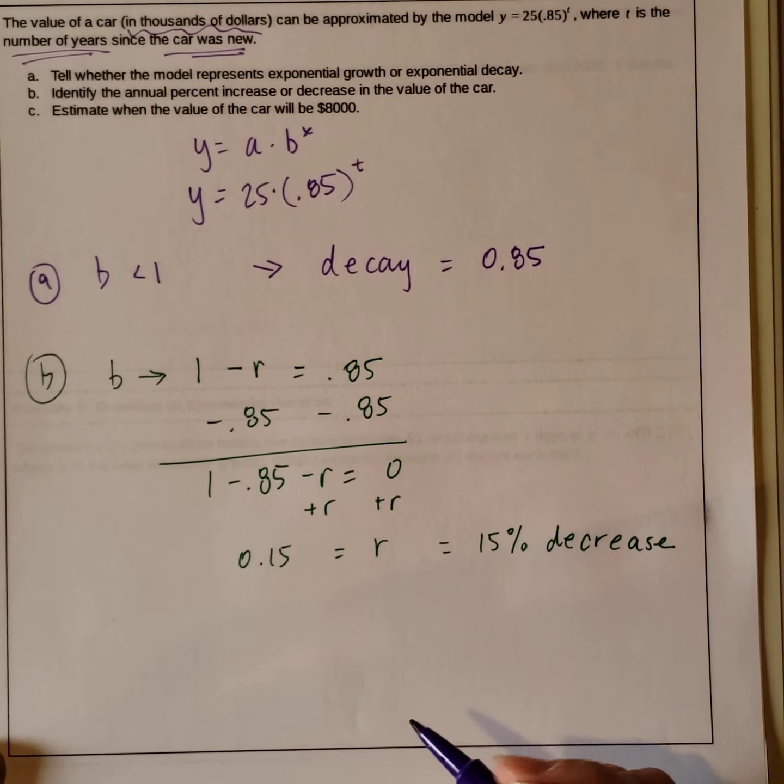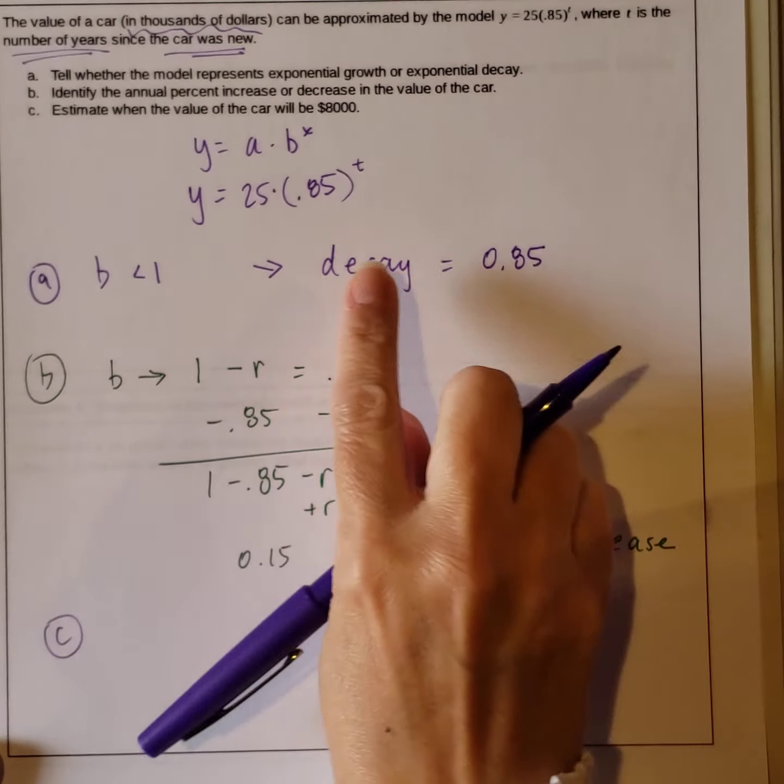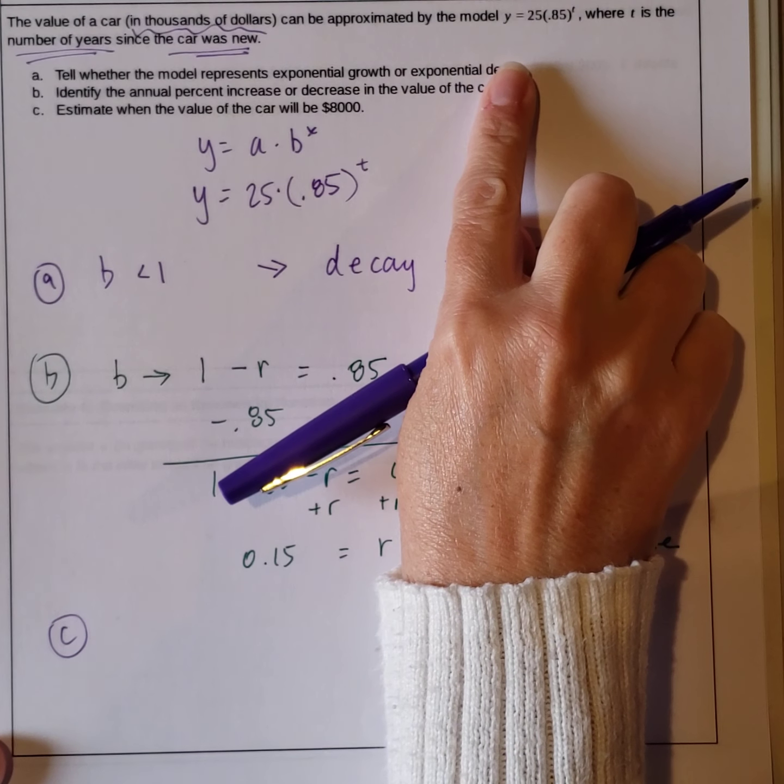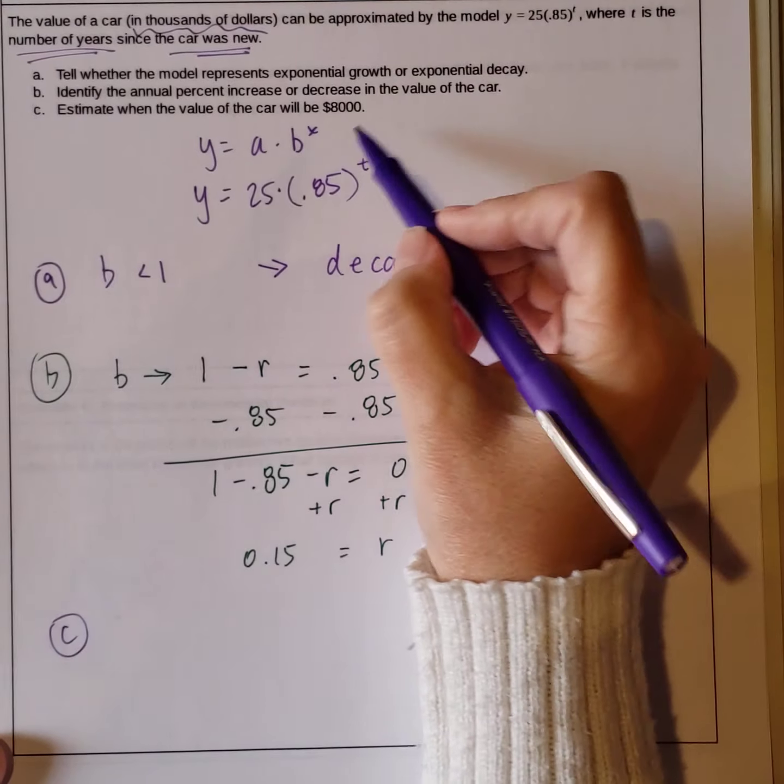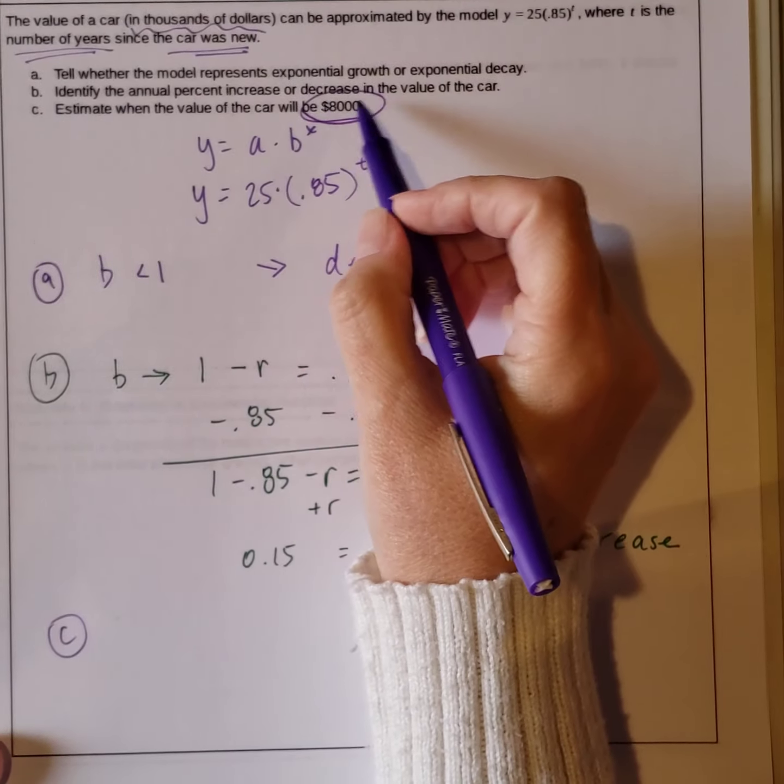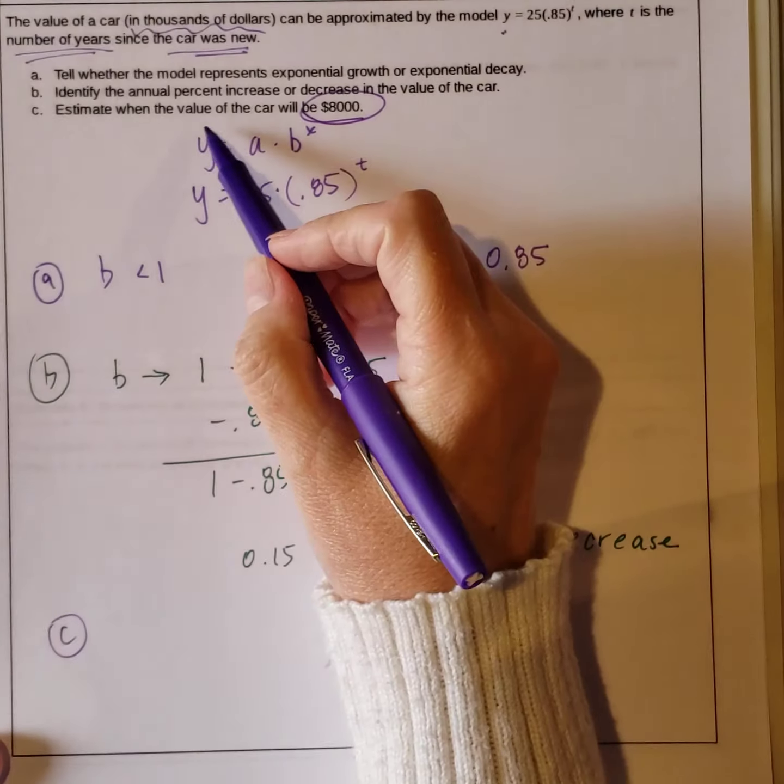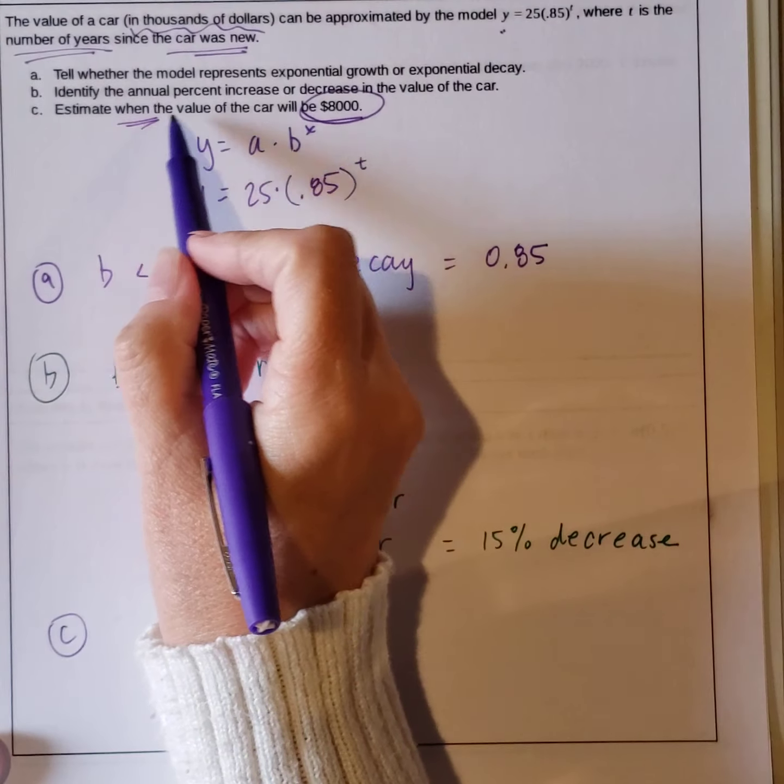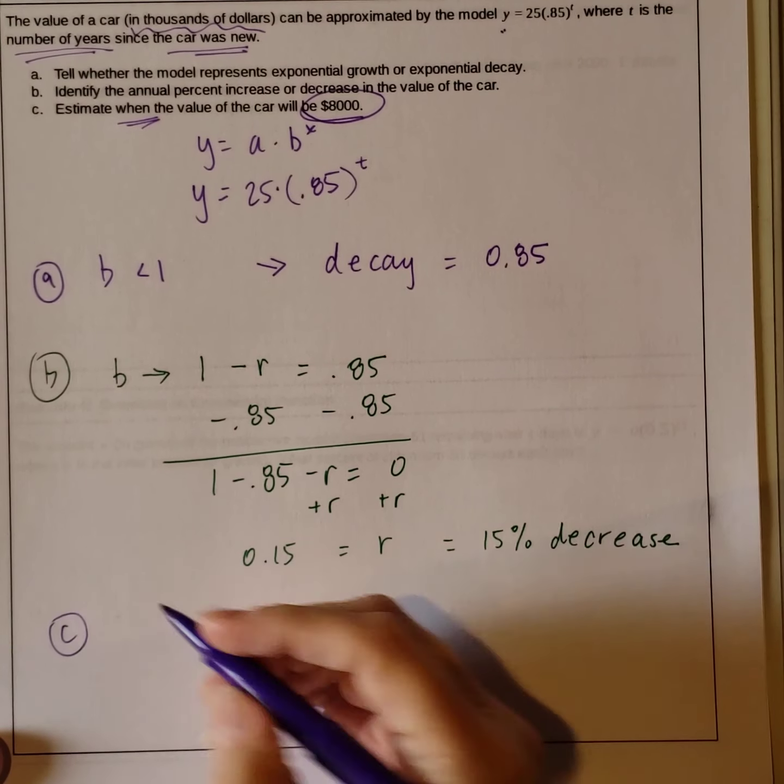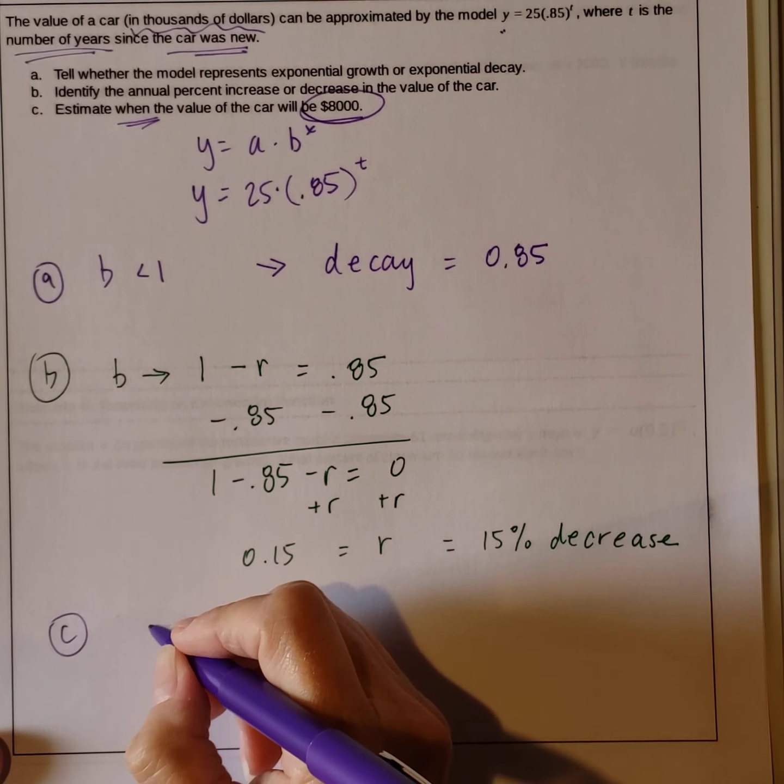Part c asks you to estimate when the value of the car will be $8,000. So the value of the car in thousands of dollars. So this is the value of our car, $8,000, is what we're going to substitute in for y. We're asked to find when. So that is our time, that's our t. But when we graph it, it's also our x value.